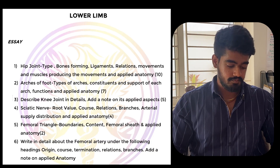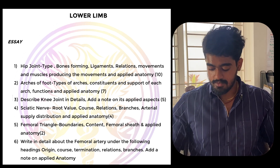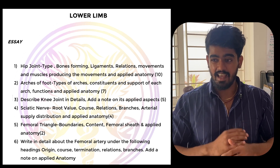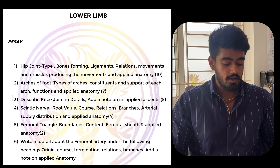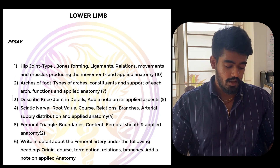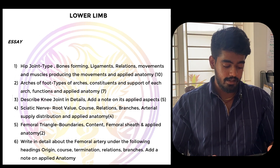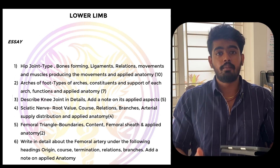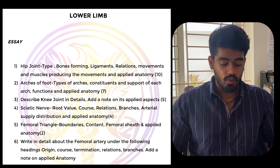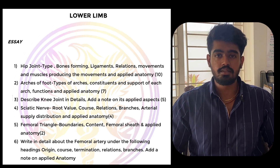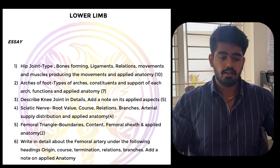Coming to lower limb — lower limb can be daunting because it is really complex, but just revise again and again. The important essay questions are: hip joint, arches of the foot, knee joint, sciatic nerve, femoral triangle and femoral artery. Once you are done with the essay questions, most of the short notes will be covered under these.